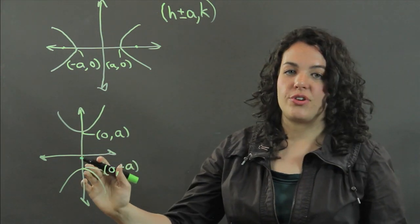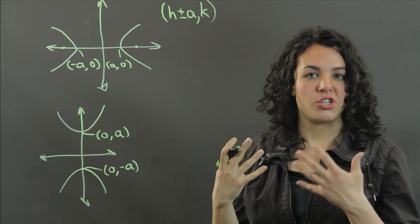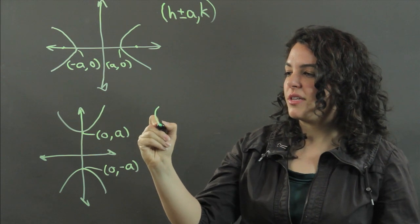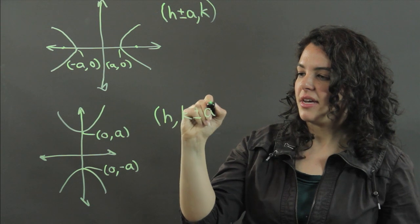And in this case, it's centered on the origin. But if it's not centered on the origin, if it's a center of h,k, we would say that the vertices are found at h, k plus or minus a.